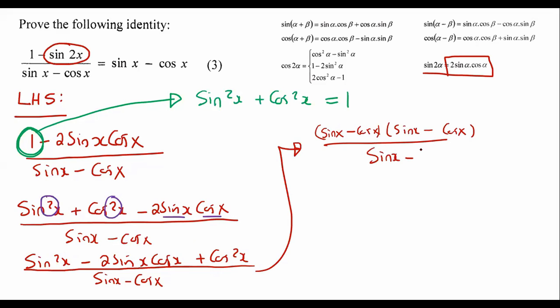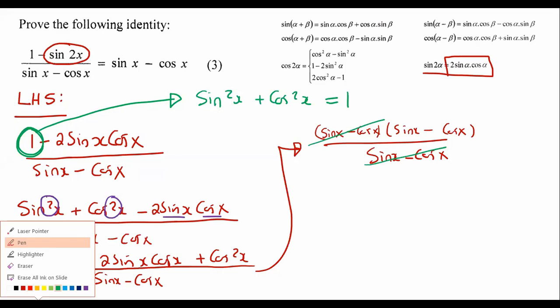Then at the bottom we still have sin x minus cos x, and then it's easy from here on out because now we can cancel one of these with one of these.